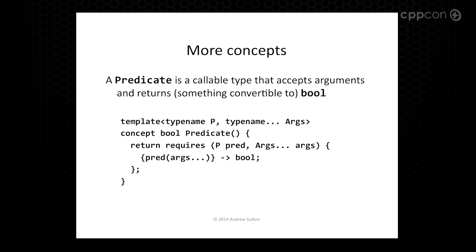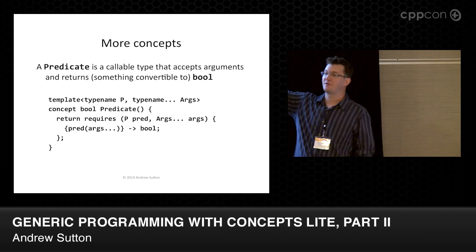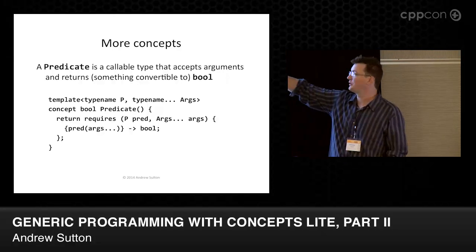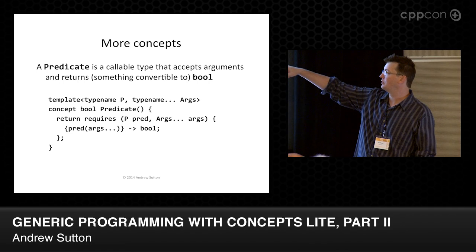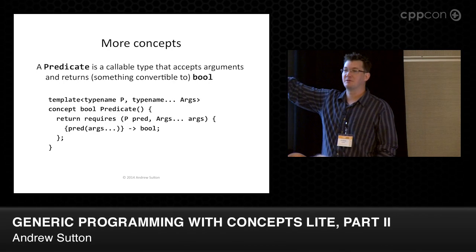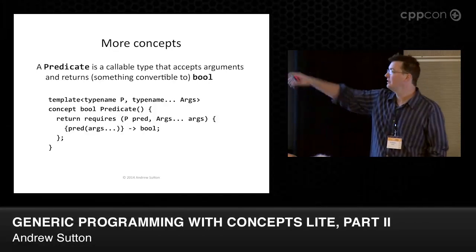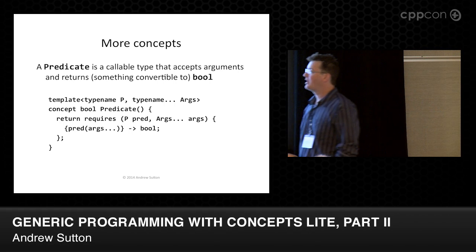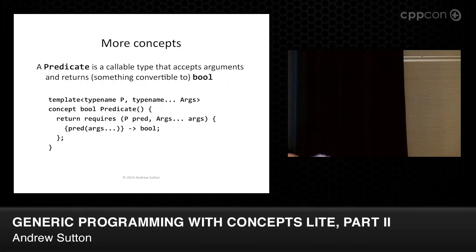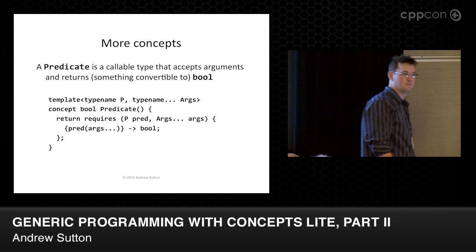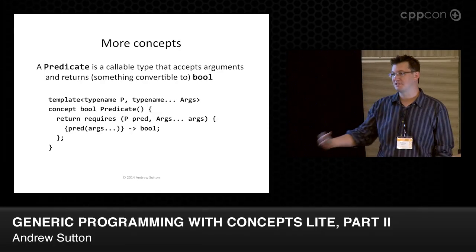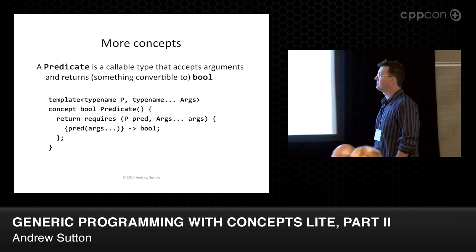Here's another quick example of a concept — this is the predicate concept — just to show that these actually work with variadic templates. Predicate is a concept where the first argument is your function object, function pointer, callable, or whatever. Args is a sequence of things you want to call it with. So if you want to know if you can call pred with args, you write pred(args...) expanded. If that turns out to be valid when substituted, then the concept is satisfied. If not, then it's not.